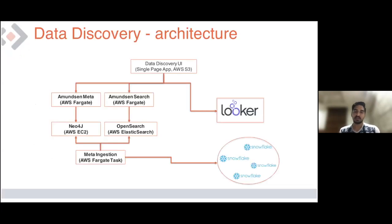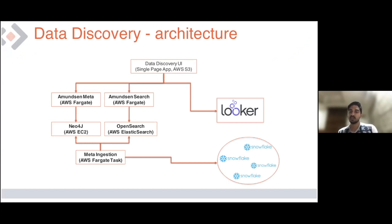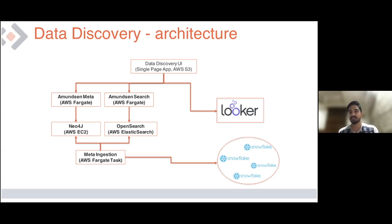We use three major functionalities from Amundsen: the meta-ingestion service, the Amundsen meta-API service, and the Amundsen search API service. We have different businesses using data discovery, and we use meta-ingestion to query all these databases. It then publishes data to Neo4j and OpenSearch — OpenSearch being the AWS Elasticsearch service. The Amundsen meta-API is hosted on AWS Fargate and communicates with Neo4j to provide metadata. The Amundsen search API works with OpenSearch to allow users to search datasets. We have developed our own UI from scratch using our MCP services, hosted on AWS S3.